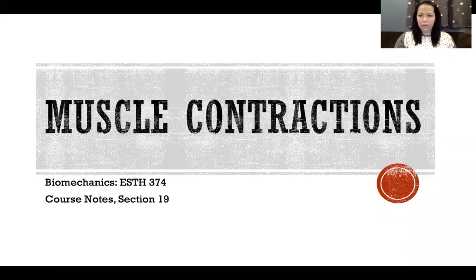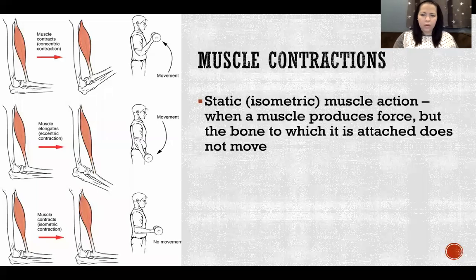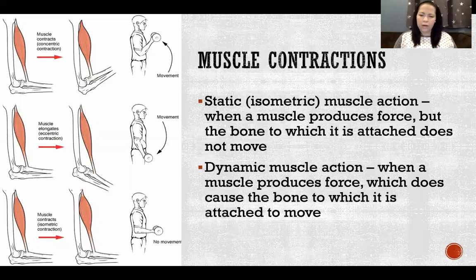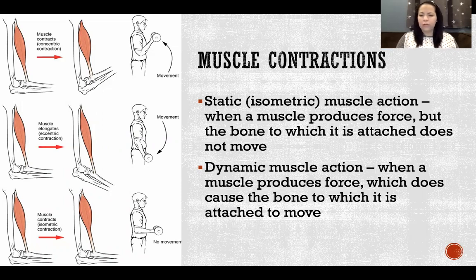In this video I'm going to talk about muscle contractions. Muscle contractions can be static or dynamic. Another term for a static muscle action is an isometric muscle contraction — it's when a muscle produces force but the bone to which it is attached does not move.